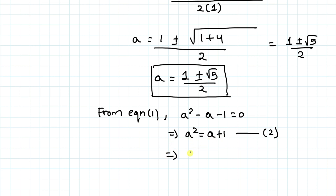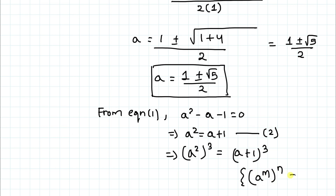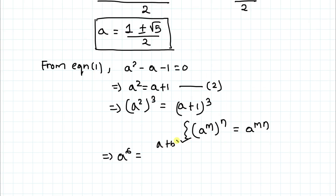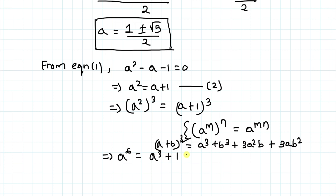Now cubing both sides: (a²)³ = (a + 1)³. Using the exponent law, (aᵐ)ⁿ = aᵐⁿ, we get a⁶ = (a + 1)³. Expanding using the identity (a + b)³ = a³ + b³ + 3a²b + 3ab², and taking b = 1, we get a⁶ = a³ + 1 + 3a² + 3a.